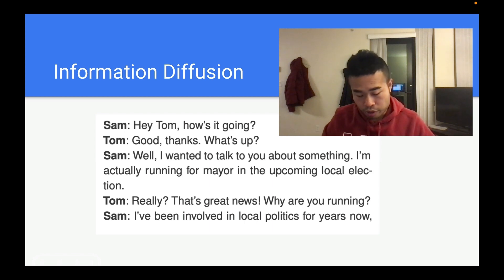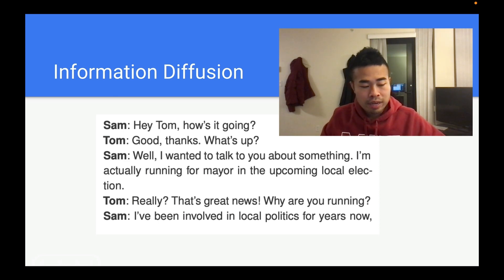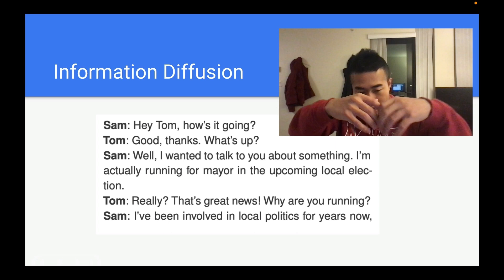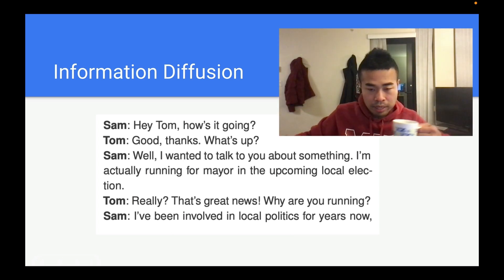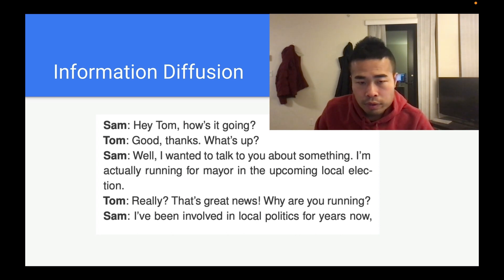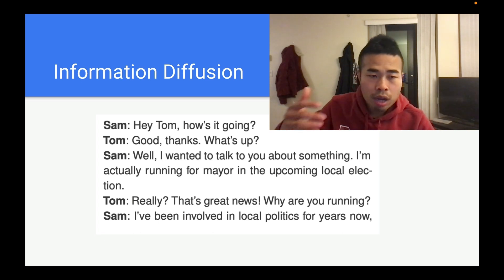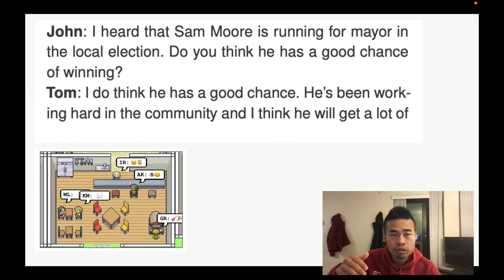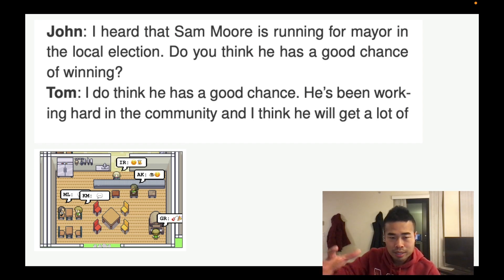When they interact with each other, you can see how information spreads — it's called information diffusion. If I talk to somebody about my things, this person will talk to another person, and another person will talk to more people. For example, Sam tells Tom, 'I am actually running for mayor in the upcoming local elections.' Tom then tells John, 'I heard Sam Moore is running for mayor.' And John says, 'I do think he has a good chance.' That's how gossip and information spread.